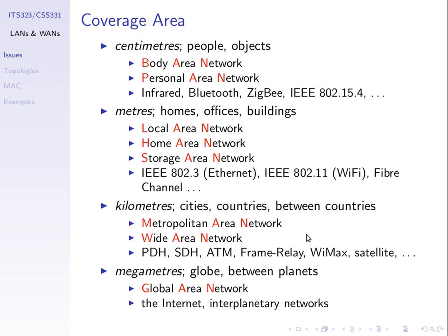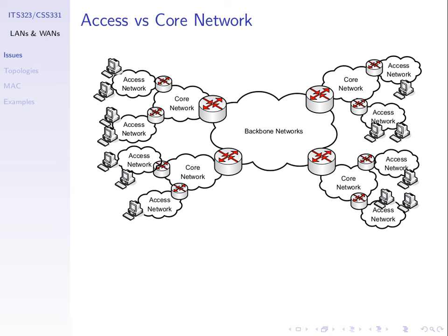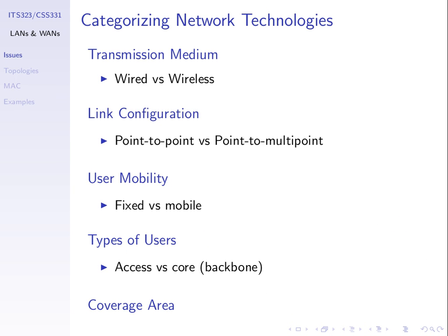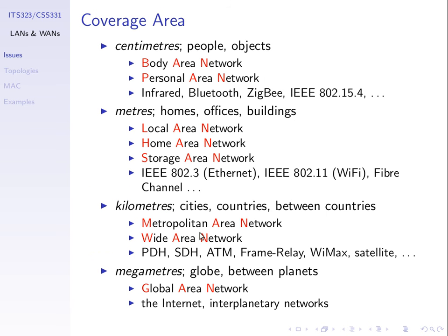Any questions about these classifications of networks? Just be aware that we talk about networks from different perspectives: medium, link configuration, the type of user, user mobility — some networks support users being mobile, some assume users don't move — and coverage area. A personal area network is sometimes close to a LAN in terms of similarities.